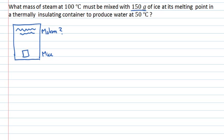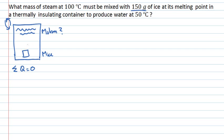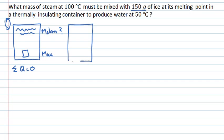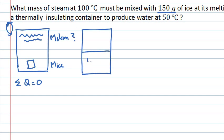It's an insulating container, so no heat can be either added to or taken away from the container. This tells me that the energy inside the system is conserved, and the sum of my heats must be zero. After some time, this system will equilibrate to give us water at 50 degrees Celsius in equilibrium.